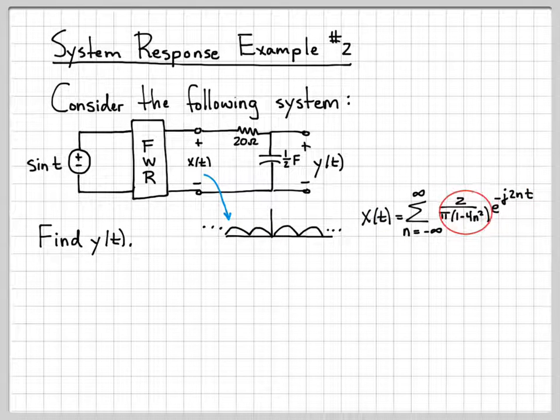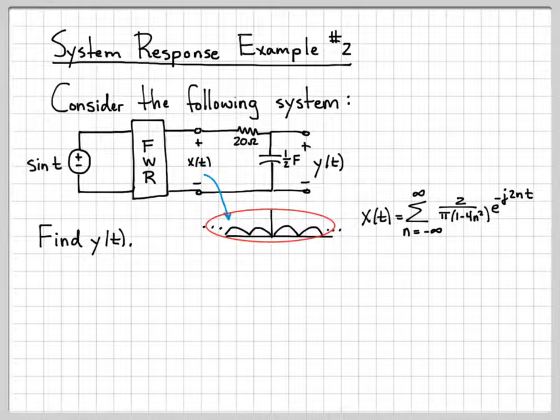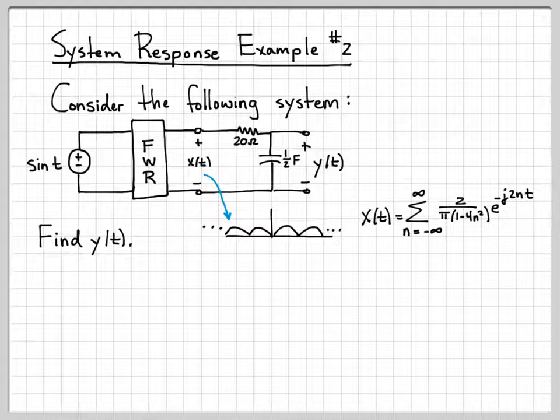And these DNs right here are the exponential Fourier series coefficients for this signal. So at this point, we're almost kind of starting the problem right here. I now know what this signal is in the time domain, and I've broken it down into frequency components.